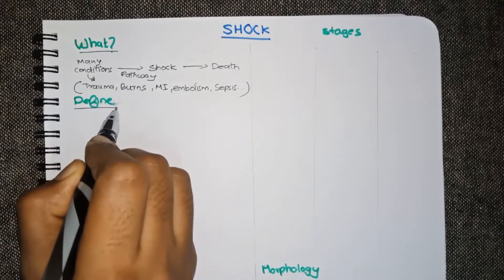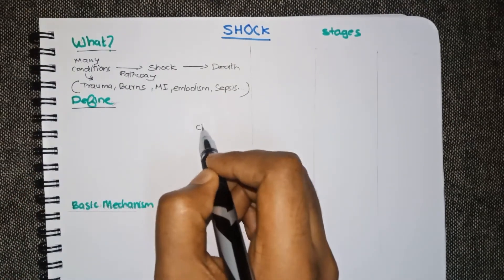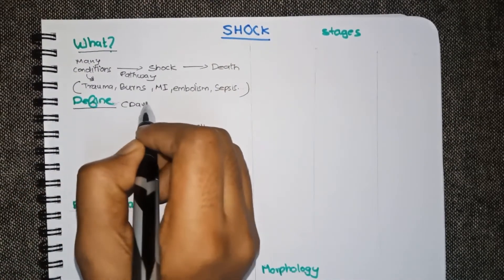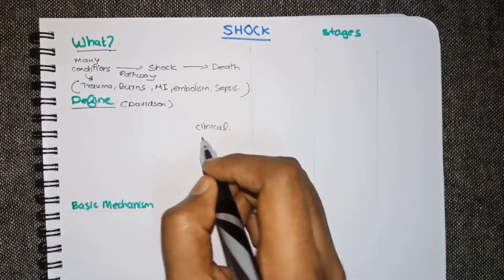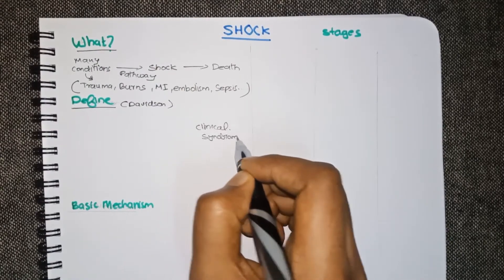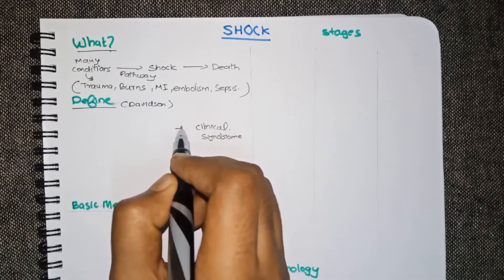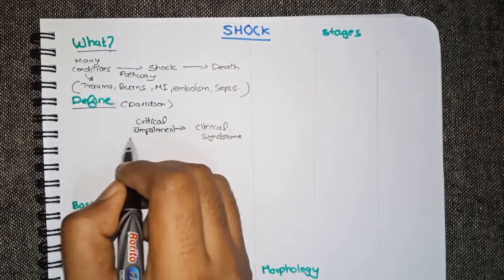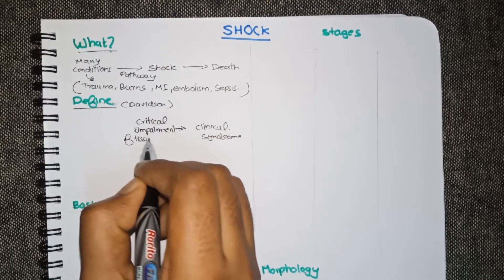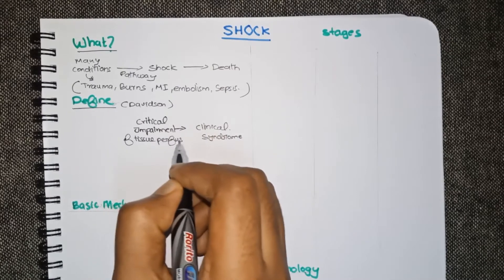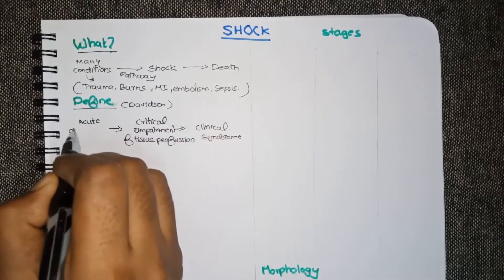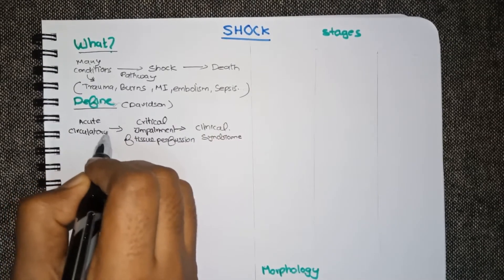Now the definition varies according to the book we refer. According to Davidson, shock is a clinical syndrome that develops when there is critical impairment of tissue perfusion due to some form of acute circulatory failure.